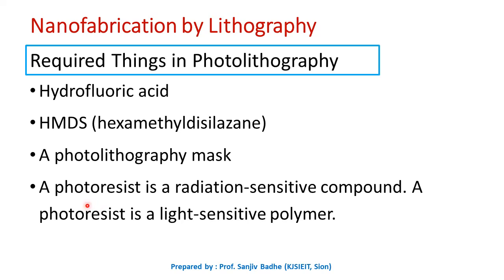In the case of positive photoresist, the region exposed to light becomes more soluble in the alkali solution and therefore can be easily removed in the developing process. The net result is the pattern formed onto the semiconductor wafer is the same as the pattern on the mask. But in the case of negative photoresist, the exposed region becomes less soluble in the alkali, and therefore the patterns engraved are the reverse of the mask patterns.